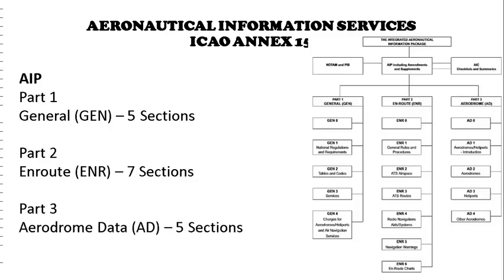AIP Part 2 is En Route, which is divided into seven sections. En Route 0 is table of contents. En Route 1 covers general rules and procedures. En Route 2 covers air traffic services airspace. En Route 3 covers ATS routes. En Route 4 is on radio navigation aids and systems. En Route 5 covers navigation warnings, where prohibited, restricted, and danger areas are published. En Route 6 is the en route charts.